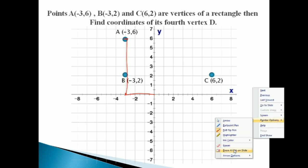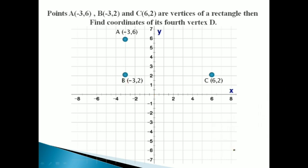Now we have to find the fourth coordinate of the rectangle forming by these 3 points। तो अगर rectangle form हो रहा है तो पहले उसे बना देते हैं — A-B को connect किया, फिर B-C को। अब C से एक side ऊपर जानी चाहिए A-B के parallel and equal, और A से B-C के parallel एक side जानी चाहिए। तो यह intersection point should be the fourth vertex of our rectangle।